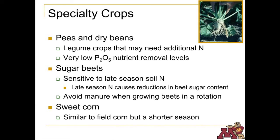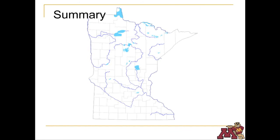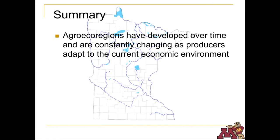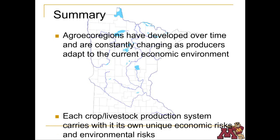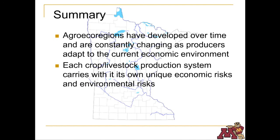Peas, dry beans, sugar beets, and sweet corn are also grown in Minnesota. Planted for human consumption, these are often grown in rotation with other crops as a way to break insect or disease cycles. Agro-ecoregions evolve and change continuously as producers adapt to current market demands. Each crop and livestock production system carries its own unique economic and environmental risks.